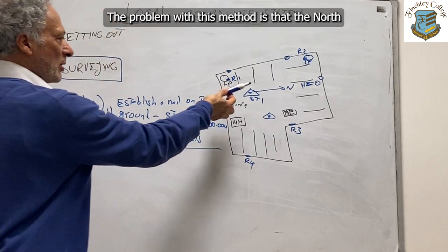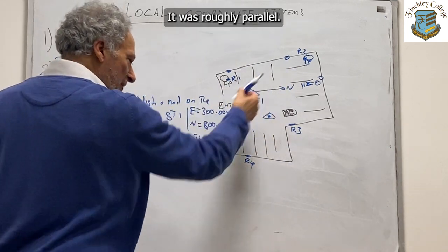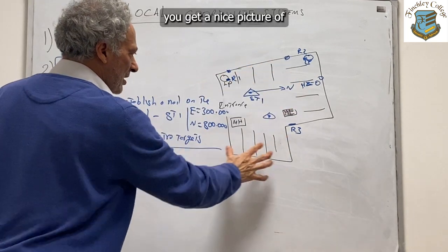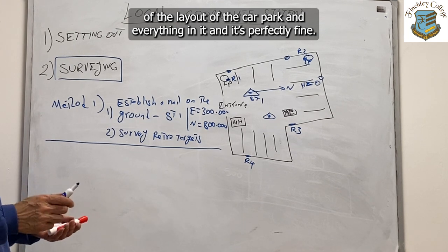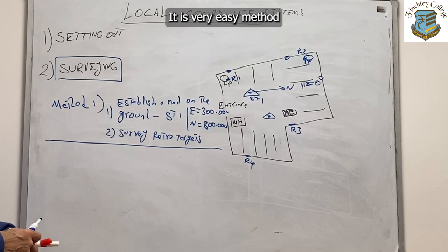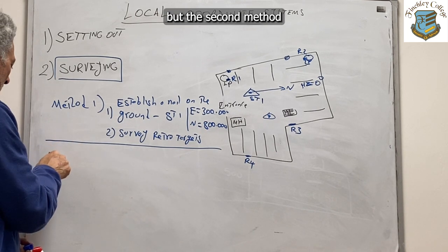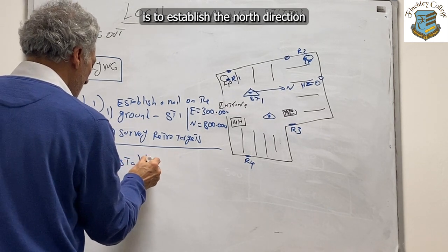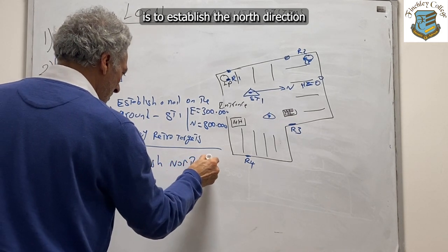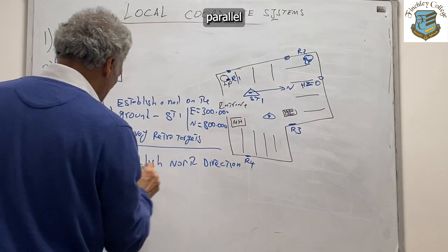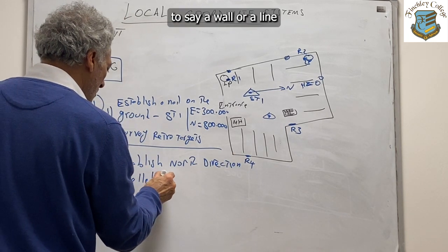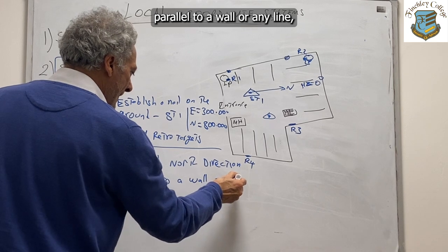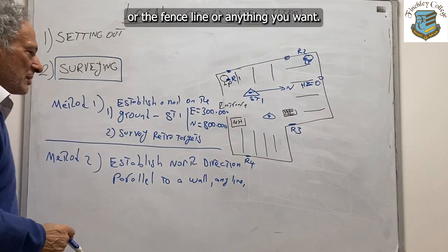The problem with Method 1 is that the north direction wasn't really parallel to anything — it was only roughly parallel. There's nothing wrong with that; you get a nice picture of the layout of the car park in AutoCAD, and it's perfectly fine. But Method 2 is to establish the north direction parallel to a wall, a curb line, a fence line, or any feature you want.